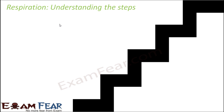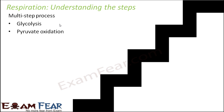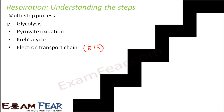Let us understand the steps of aerobic respiration. It is a multi-step process — the beginning is glucose and the end is carbon dioxide, water, and a lot of energy in the form of ATP molecules. Aerobic respiration has four steps: glycolysis, pyruvate oxidation, Krebs cycle, and electron transport chain (ETS). These four steps together convert glucose into carbon dioxide, water, and a lot of energy.